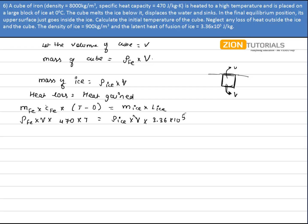So V is cancelled from both the side. I substitute the value of density of iron that is 8000 into 470 into T is equal to density of ice that is 900 into 3.36 into 10 to the power 5.